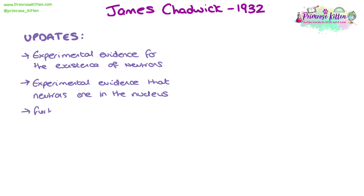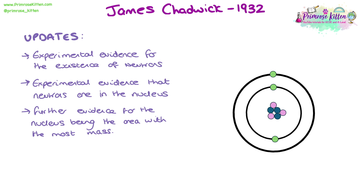Chadwick also had experimental evidence supporting the idea that the nucleus is the area of the atom with the most mass. In this updated diagram of the nuclear model, we can still see electrons at fixed distances orbiting on their shells. The key difference is that within the nucleus there are now protons and neutrons separately — the nucleus is no longer just one solid circle, but defined as two separate subatomic particles: protons and neutrons.